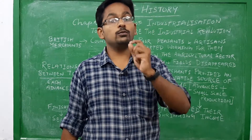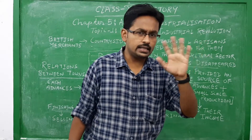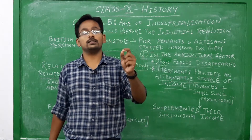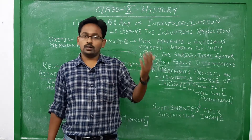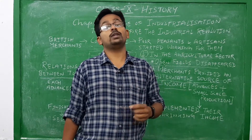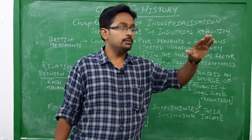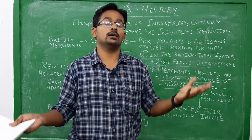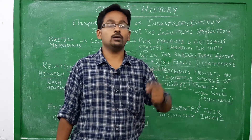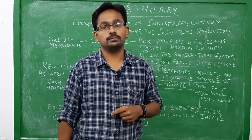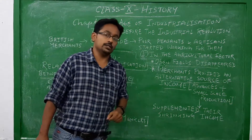The industrial revolution first occurred in England and it started during the late 18th century. Britain is the first nation where the industrial revolution occurred, and there are several reasons for that. But before going into the industrial revolution, we need to understand how the British nation was moving towards it and how Britain became the superior industrial nation all over the world. Our first topic from this chapter is: Before the Industrial Revolution.